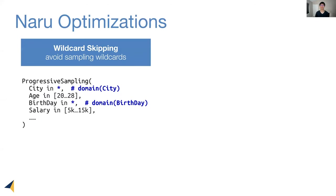Naru makes a number of optimizations, the most important of which is efficiently handling wildcards. The problem is as follows. Usually, our queries only filter a subset of columns, while the table has more columns. For instance, here, age and salary are filtered, and city and birthday are treated as wildcards.